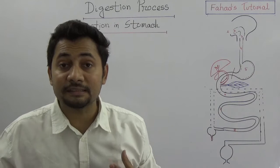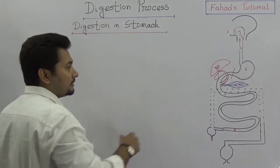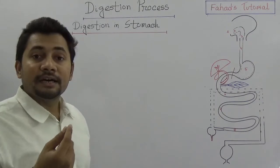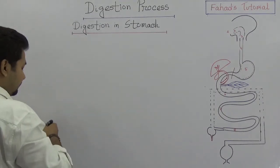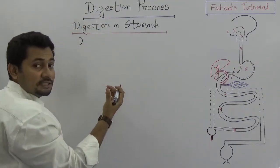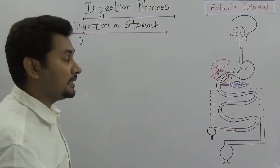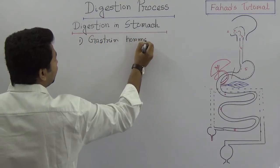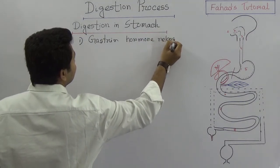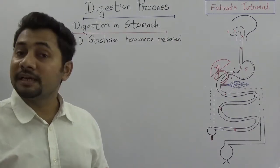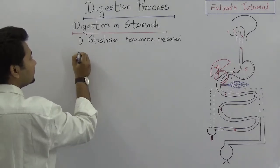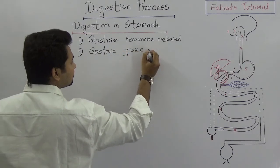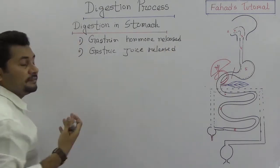When food passes down to the stomach, what happens in the stomach is the main focus of this tutorial. Inside the stomach, the inner layer has gastric glands. When food comes into the stomach, a hormone called gastrin is activated and released. When the gastrin hormone is released, gastric juice is also released.